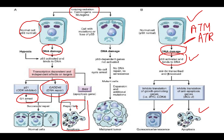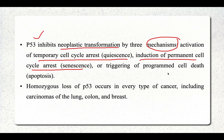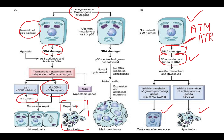So whenever DNA damage is present, three things can occur: temporary cell cycle arrest (quiescence), induction of permanent cell cycle arrest (senescence), or apoptosis if DNA repair fails. This is the mechanism by which P53 keeps neoplastic cells out of the proliferating population.